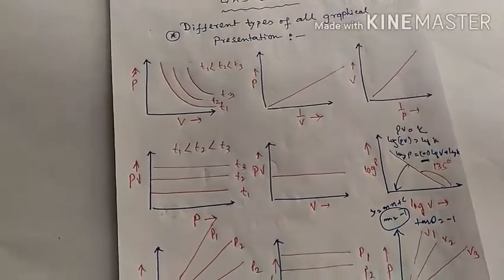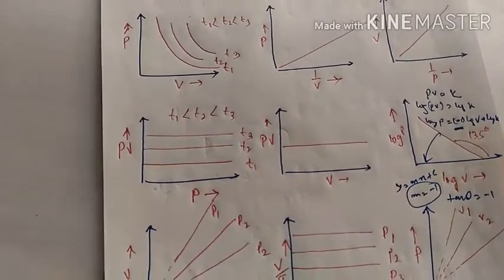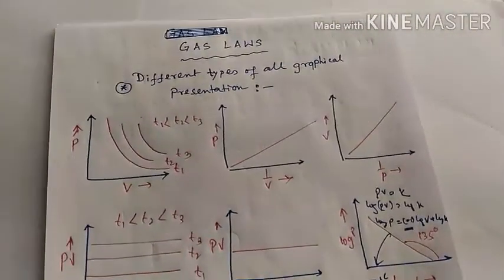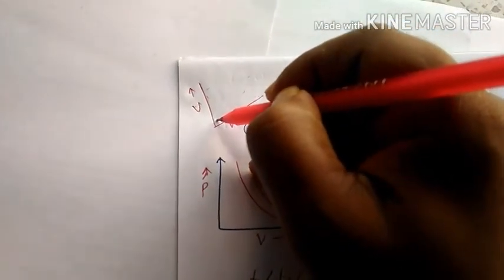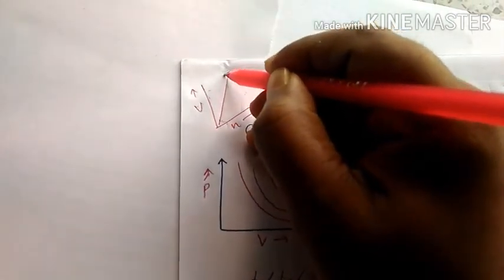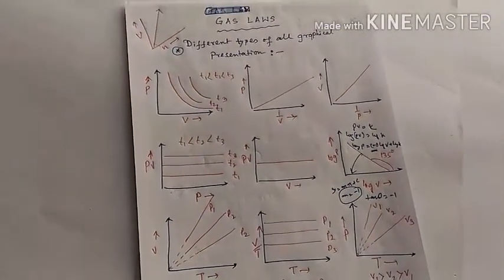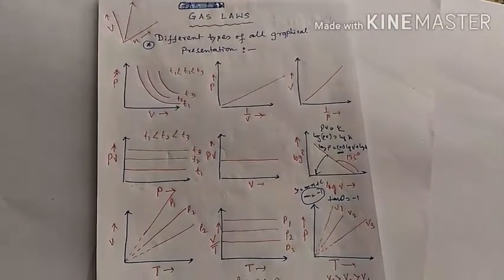From Avogadro's Law we can draw one more graph: V versus n. At constant pressure and temperature, the V vs n graph is a straight line passing through the origin. Hope you like this video — please share, like, and comment. Thank you.